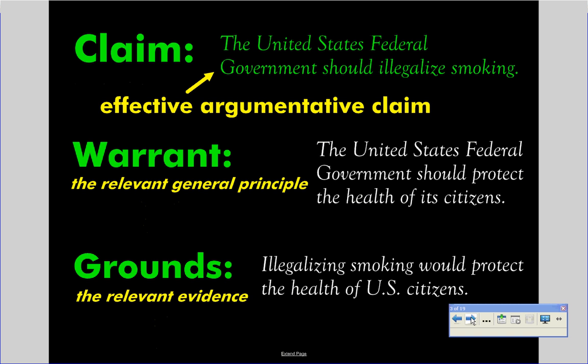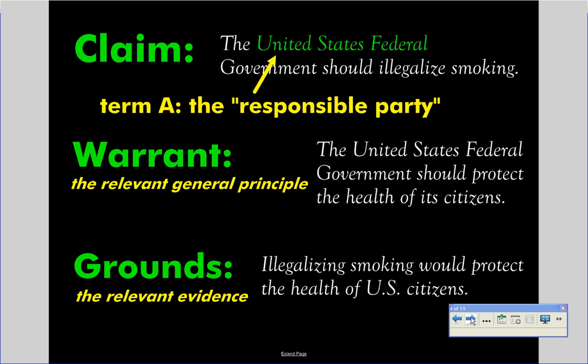You start with that effective argument claim. Your task for Thursday will be writing two of these, so as you're taking notes, start modeling your own by writing your claim in the claim position. We've proofed about six or seven of them over the last two days. A Toulmin model consists of what we might call terms.